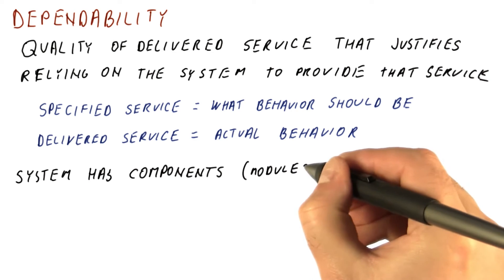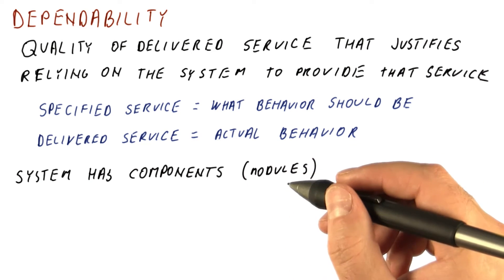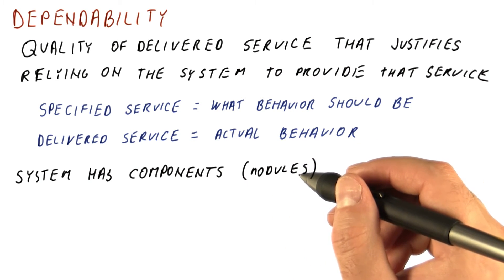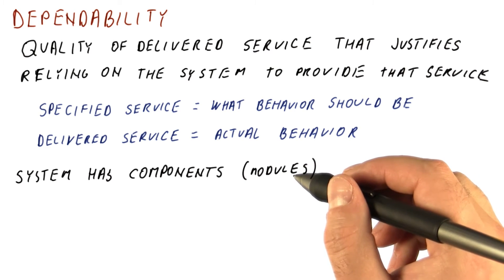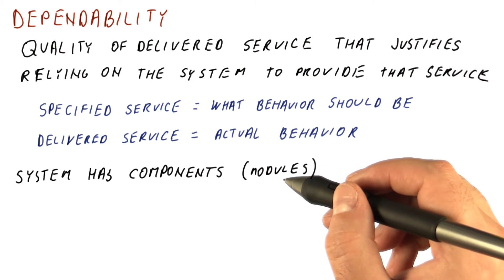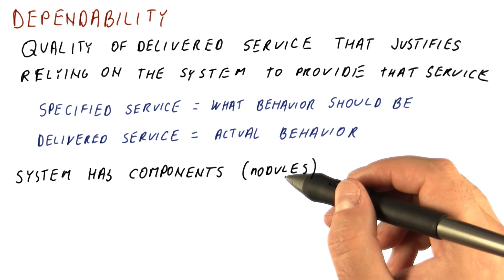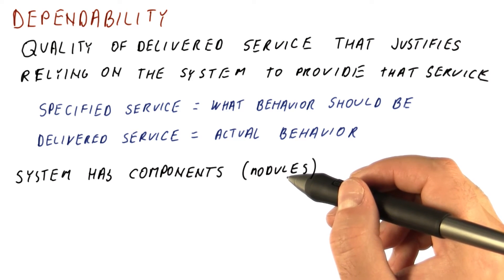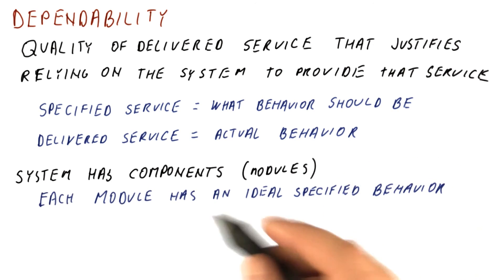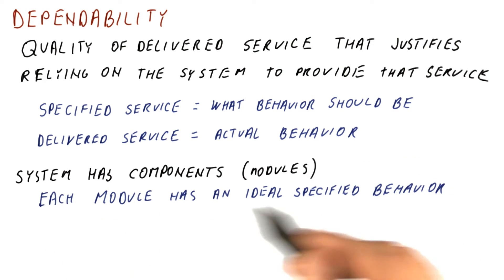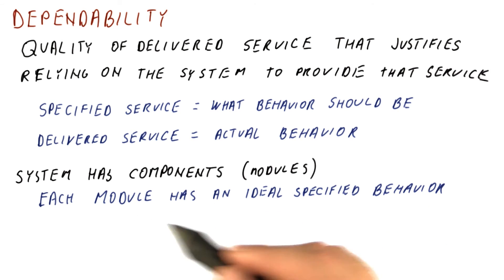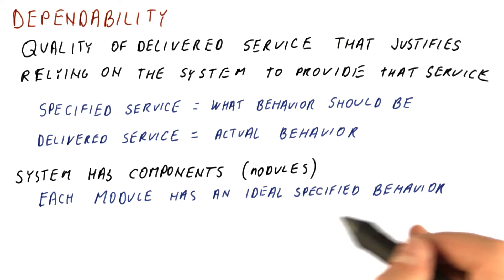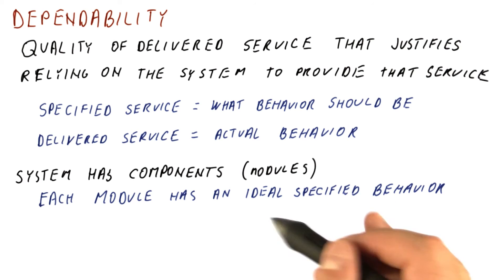The system has some components which we call modules. These are not components like transistors and so on — these are the large-ish components of the system. For example, a computer system will have a processor and a memory and so on. Each of these has components of its own, and for each of these modules we can specify some ideal behavior that we would want to expect from it.